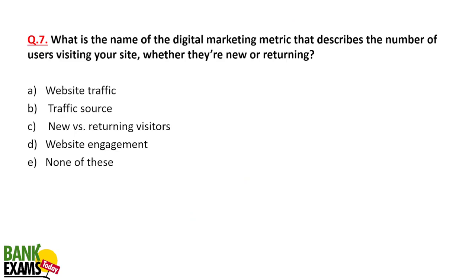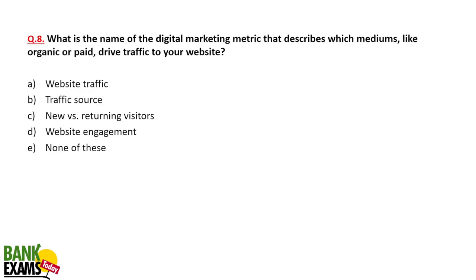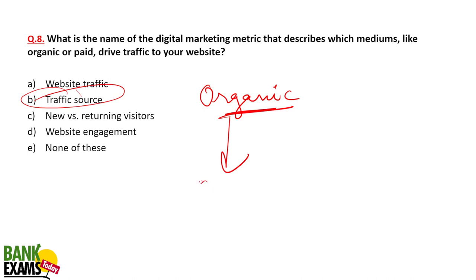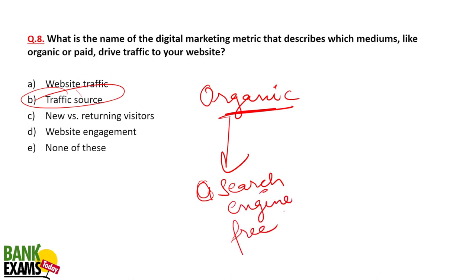The digital marketing metric that describes the number of users visiting your website is website traffic. The metric that describes which mediums — like organic or paid — drive your traffic is traffic source. Organic means traffic coming from search engines like Google that you have not paid for — free search engine traffic. That is organic traffic.